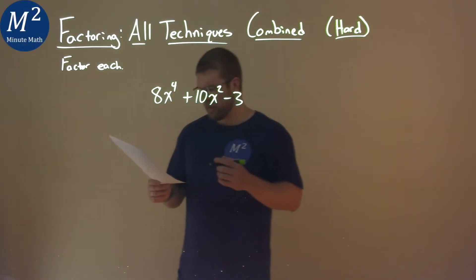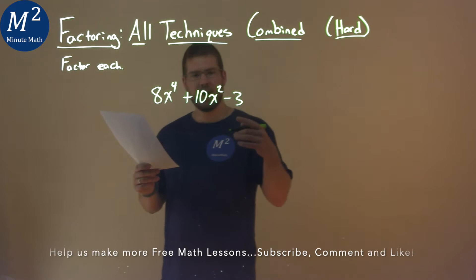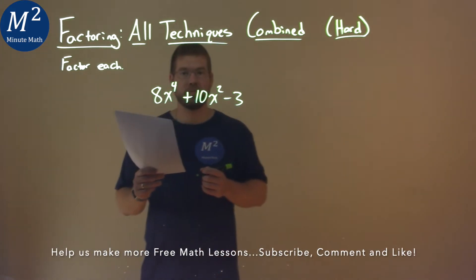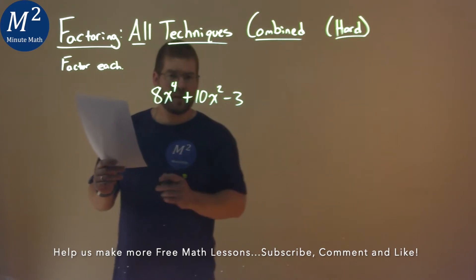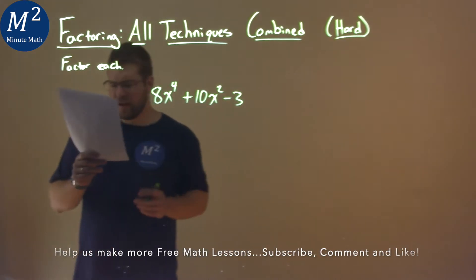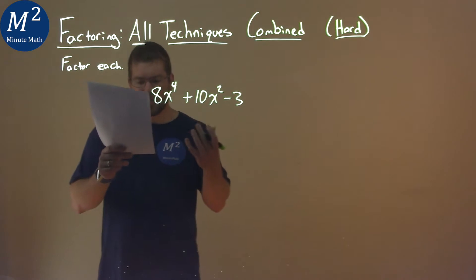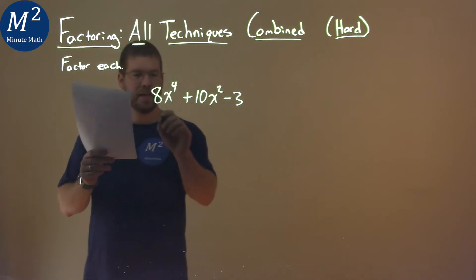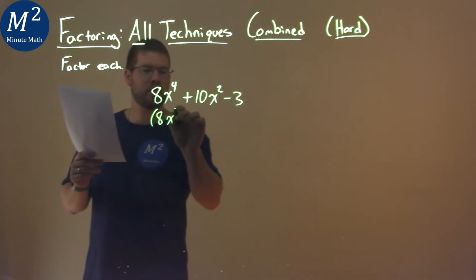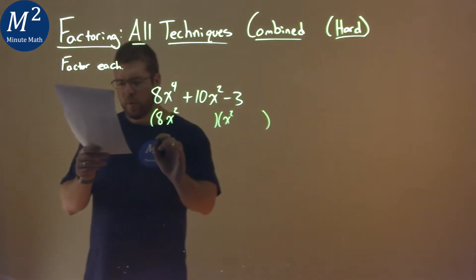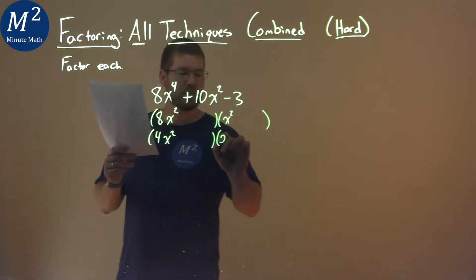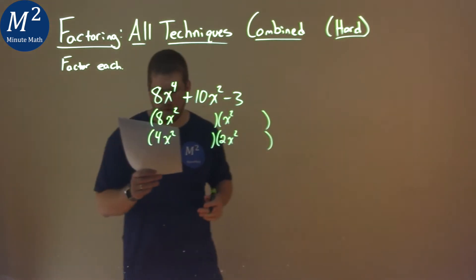We're given this problem: 8x to the 4th plus 10x squared minus 3, and we've got to factor this. We can see this is in quadratic form. The a value is 8, which means we have a few options setting this up. It can either have 8x squared times 1x squared, or we can have 4x squared times 2x squared. We're going to keep that form in mind.